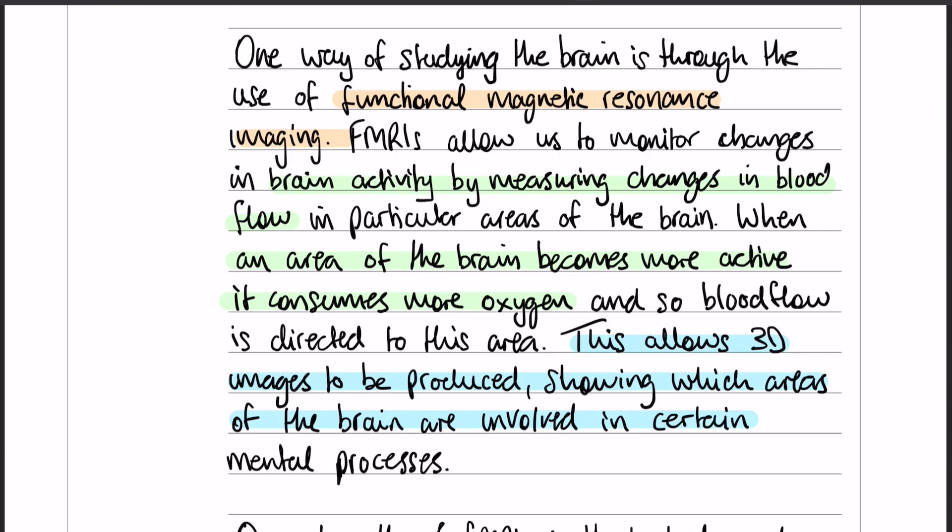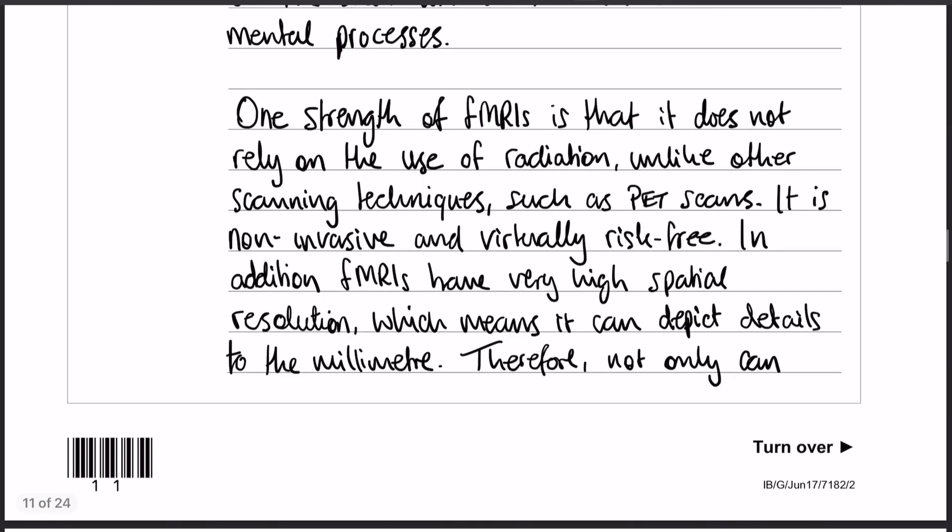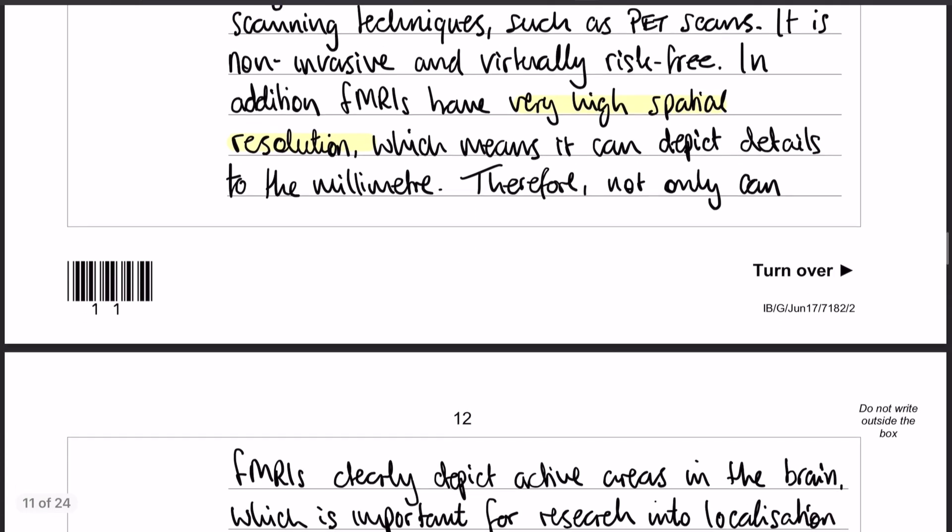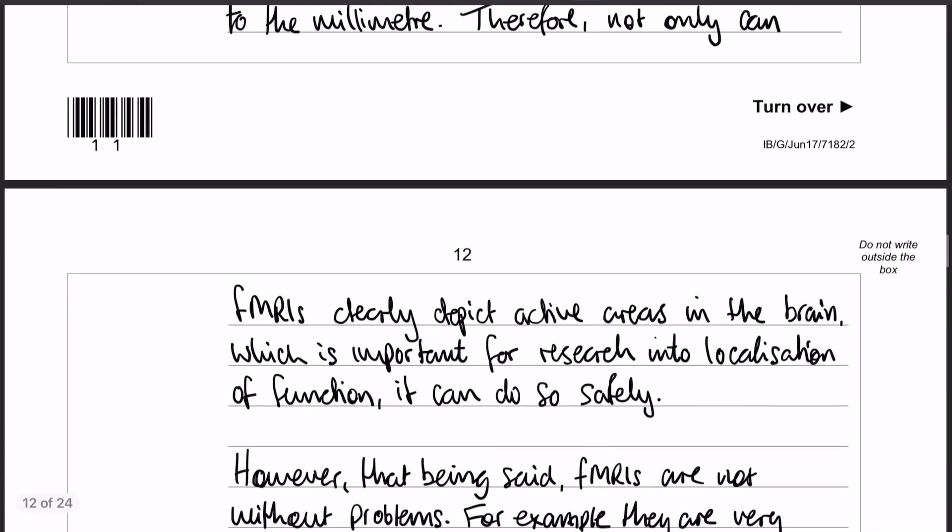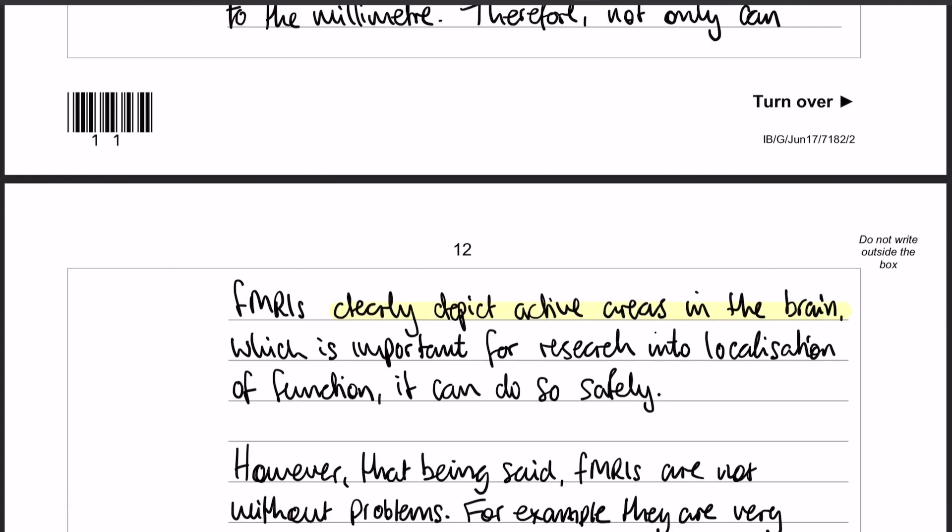So moving on, we then have a strength. It doesn't rely on the use of radiation, which means that it is non-invasive. In addition to that, it has very high spatial resolution, which means that it can depict details to the millimeter. So then my therefore sentence, my conclusion sentence for this strength, is that not only can it clearly depict active areas in the brain, which is important for research into localization of function, it can do so safely.